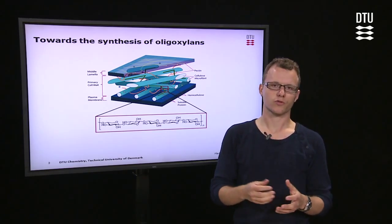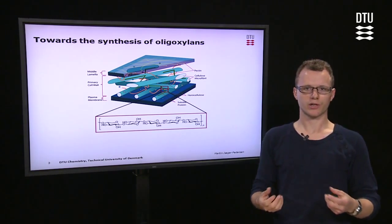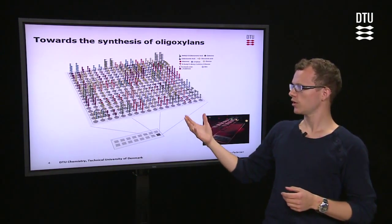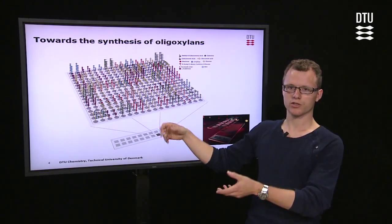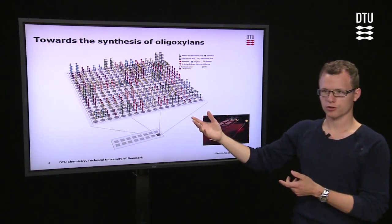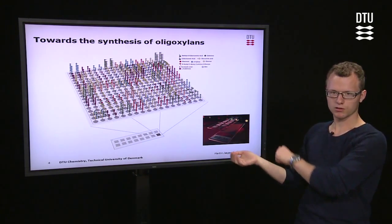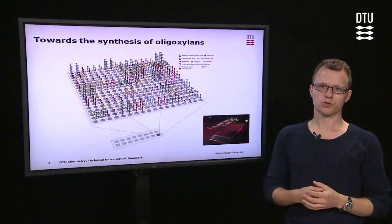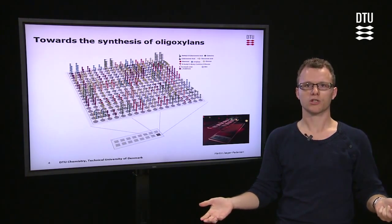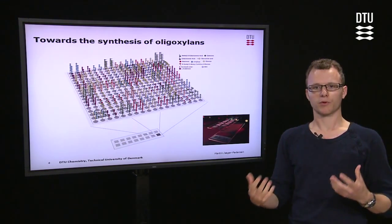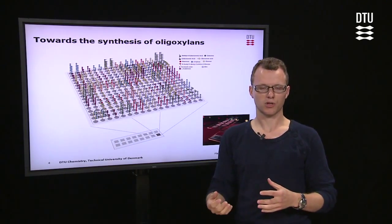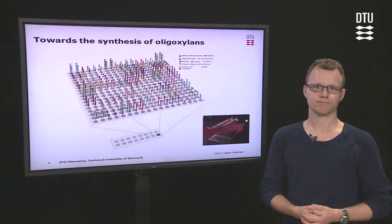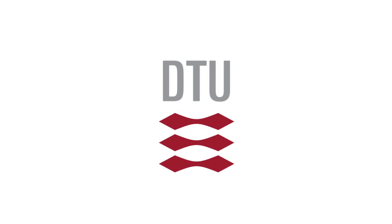The idea about synthesizing this is, of course, to study the plant cell wall in greater detail. In order to do this, we'll make a microarray where we take these oligosaccharides and put them on a specialized surface — it could be a glass plate, for example. And then we'll use probes, such as antibodies, to test on the surface and study the plant cell wall in greater detail.